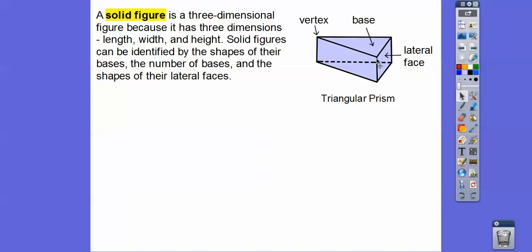Look at these lateral faces — can you see this looks like a rectangle? The back dotted piece is a rectangle, and this piece here is also a rectangle. Those are the lateral faces, and the lateral faces are rectangles. Since the top and bottom bases are congruent triangles, this is called a triangular prism.